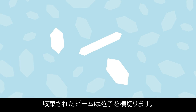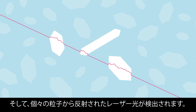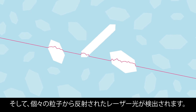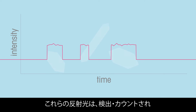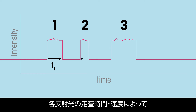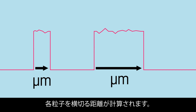As the focused beam scans across the particle system, individual particles or particle structures will backscatter the laser light to the detector. These distinct pulses of backscattered light are detected, counted, and the duration of each pulse is multiplied by the scan speed to calculate the distance across each particle.